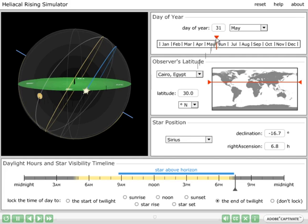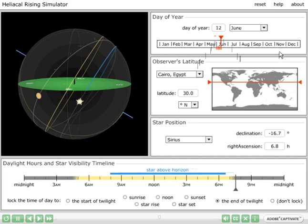If I continue moving forward in time past May 31st, we now see that Sirius clearly sets before twilight ends, and during this period an observer will not be able to see Sirius in the sky.